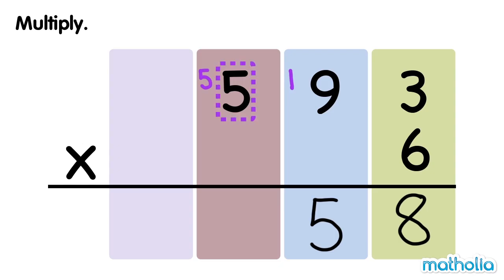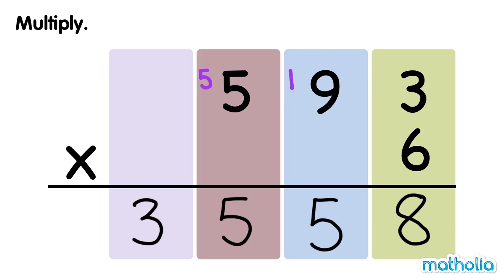Multiply the hundreds by 6 and add the regrouped hundreds. 5 hundreds times 6 equals 30 hundreds. 30 hundreds plus 5 hundreds equals 35 hundreds. Regroup 35 hundreds into 3 thousands and 5 hundreds. 593 times 6 equals 3,558.